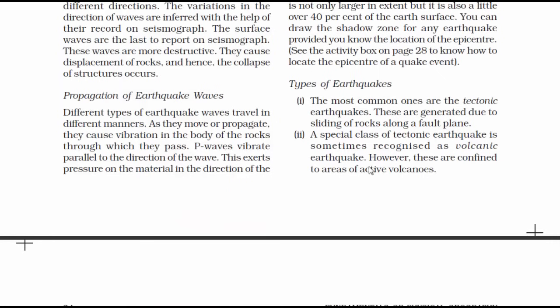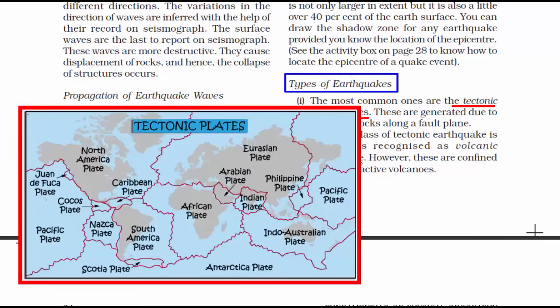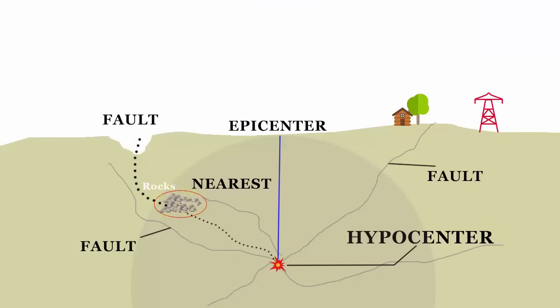Now moving on to types of earthquakes. The first one is tectonic earthquakes. Whenever you hear the word tectonic, we are referring to the breaking of the crust part of the earth's surface. The breaking of the crust is due to sliding of rocks that creates a fault — that's what tectonic earthquakes are all about.